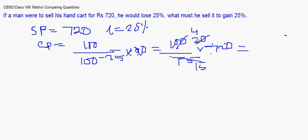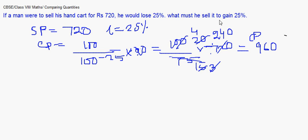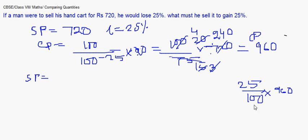Cancelling through, I get the cost price as 960. Now we have the cost price and we need to find the selling price to gain 25%. The selling price equals cost price plus profit. Profit will be 25% of 960, which gives 240.